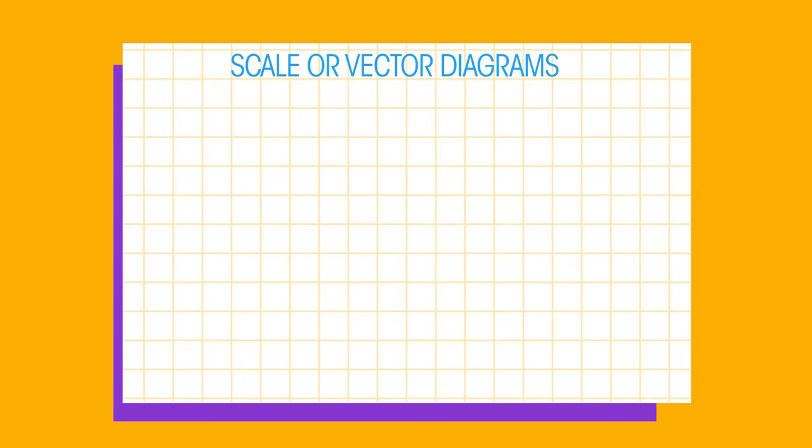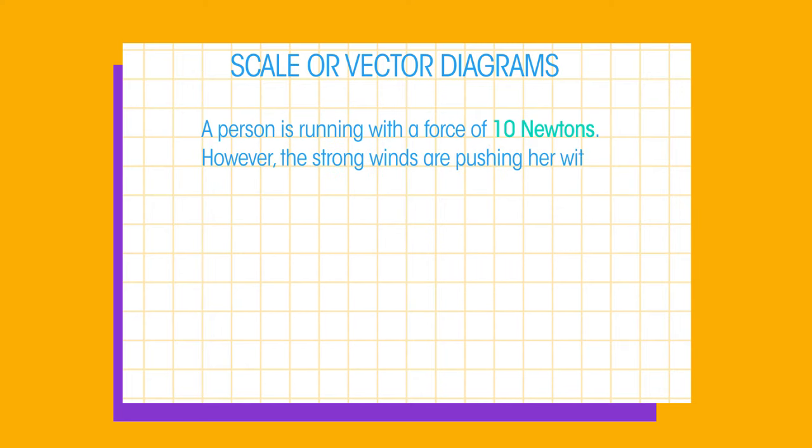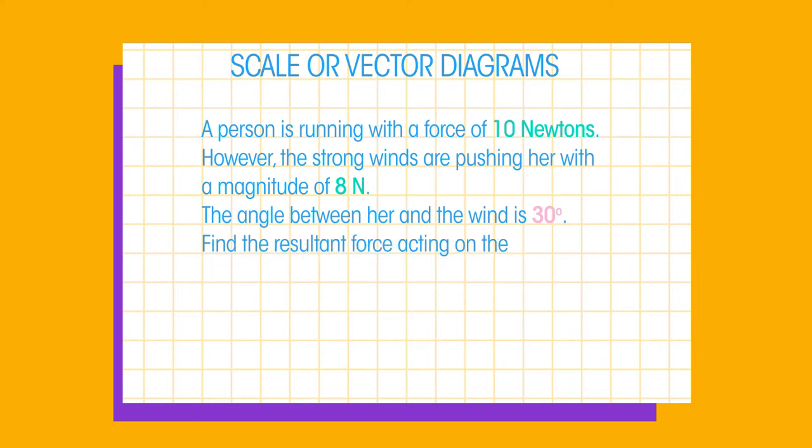Here is an example. A person is running with a force of 10 newtons. However, the strong winds are pushing her with a magnitude of 8 newtons. The angle between her and the wind is 30 degrees. Find the resultant force acting on the runner.